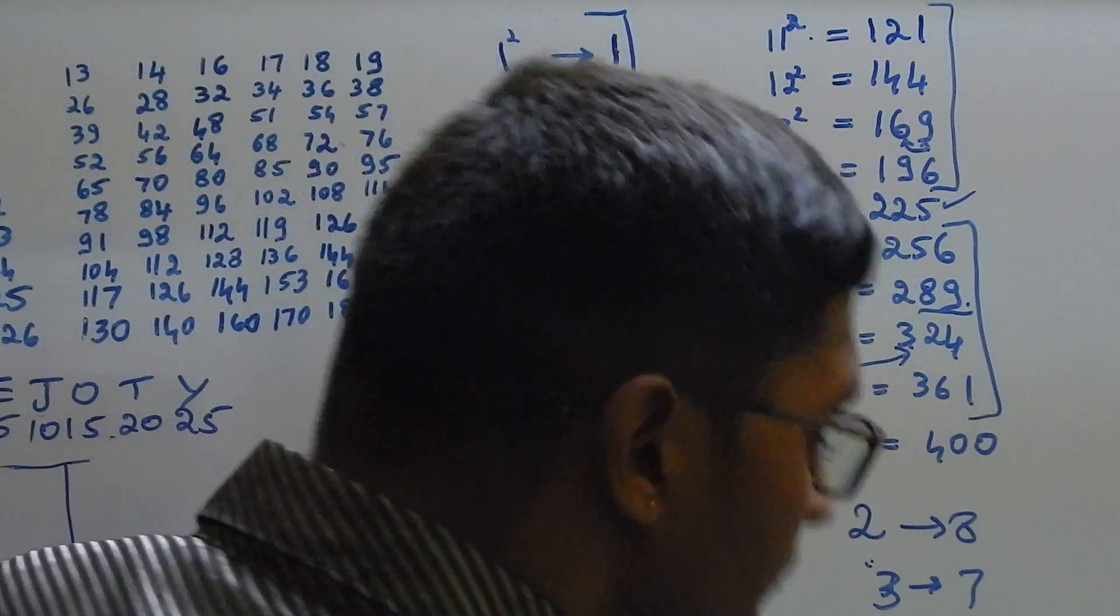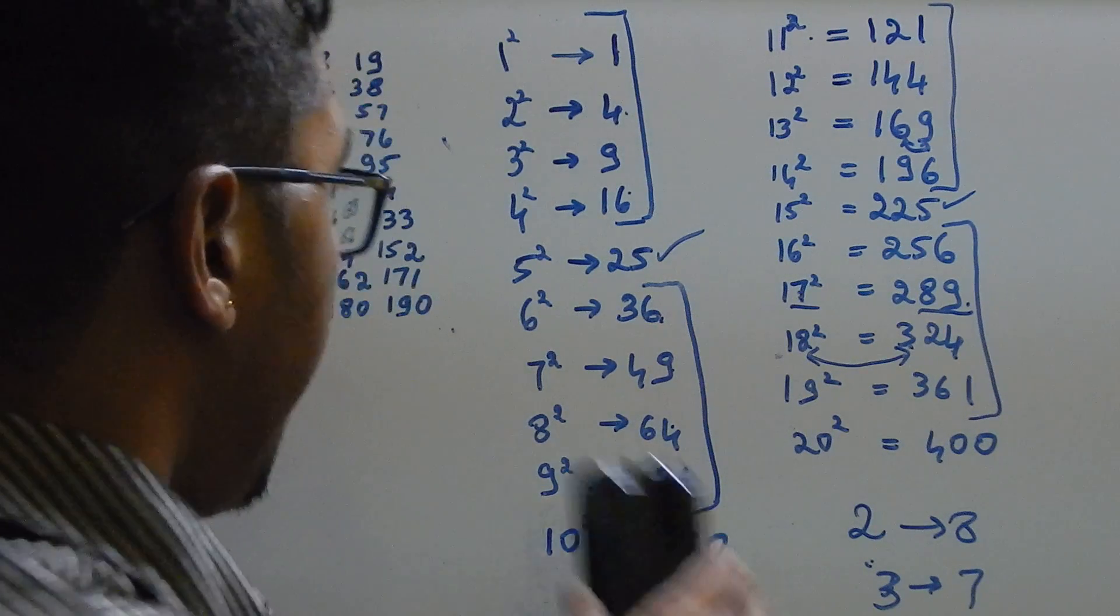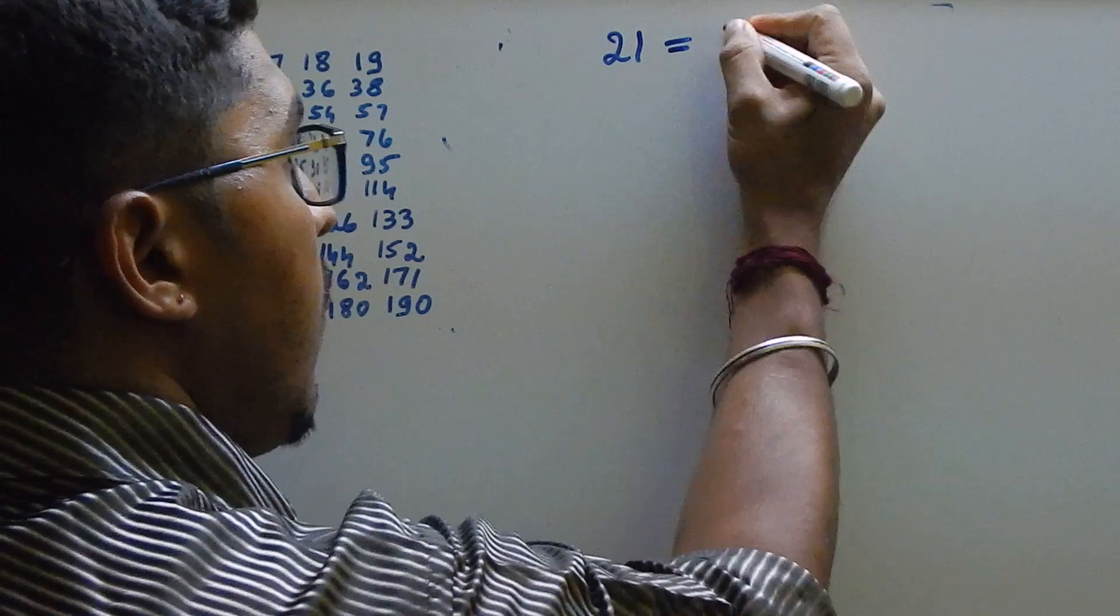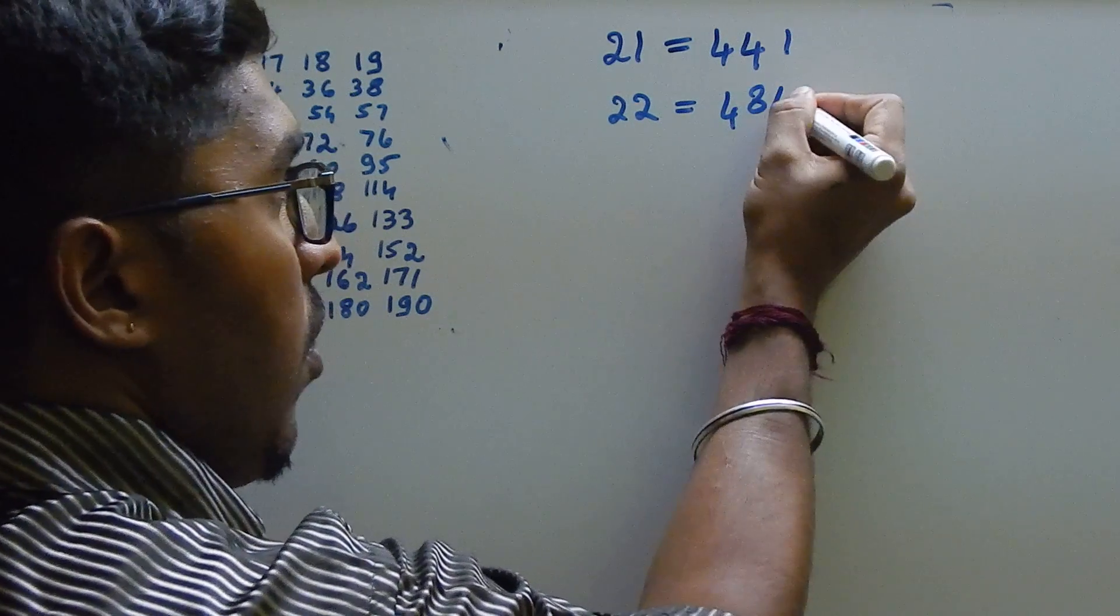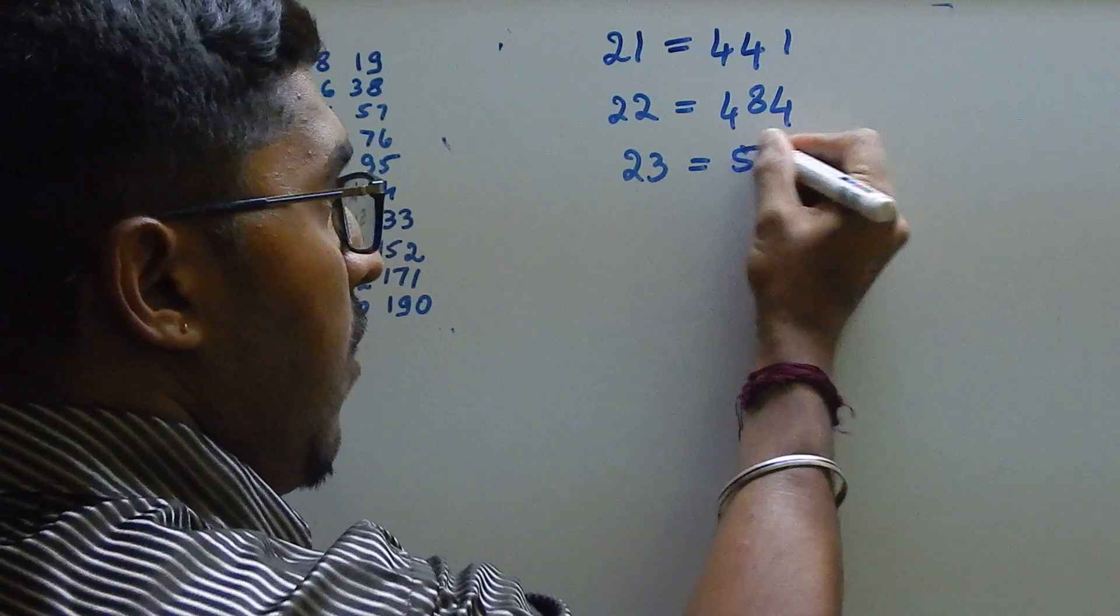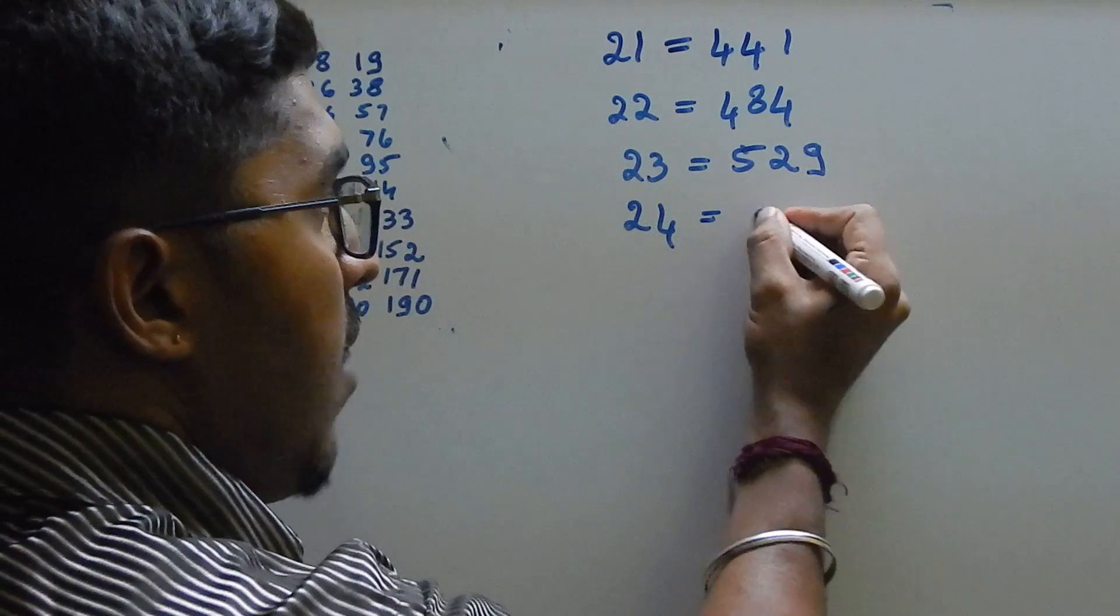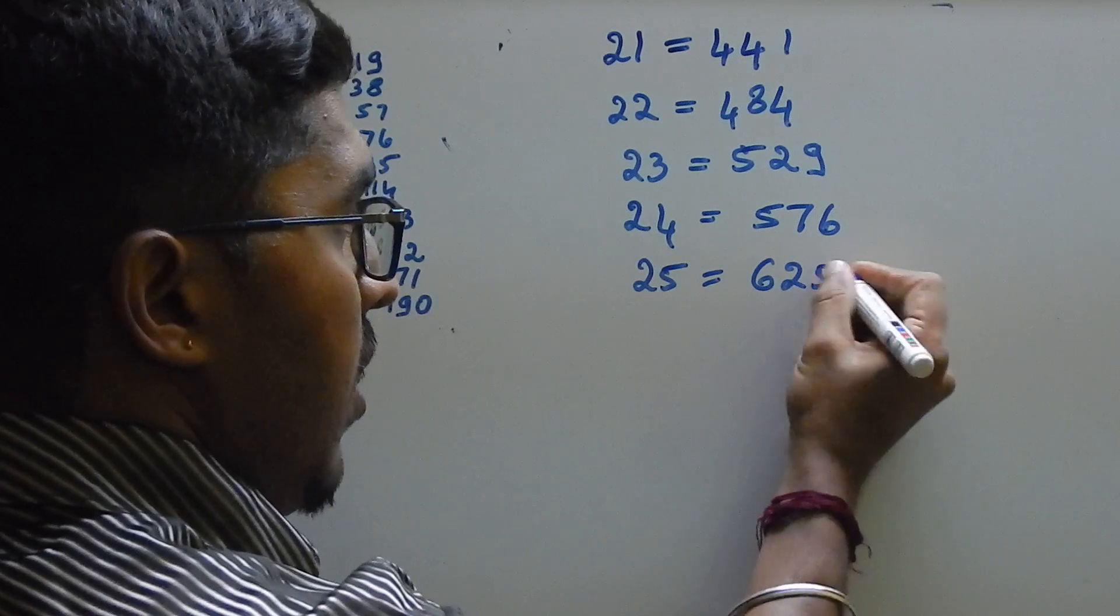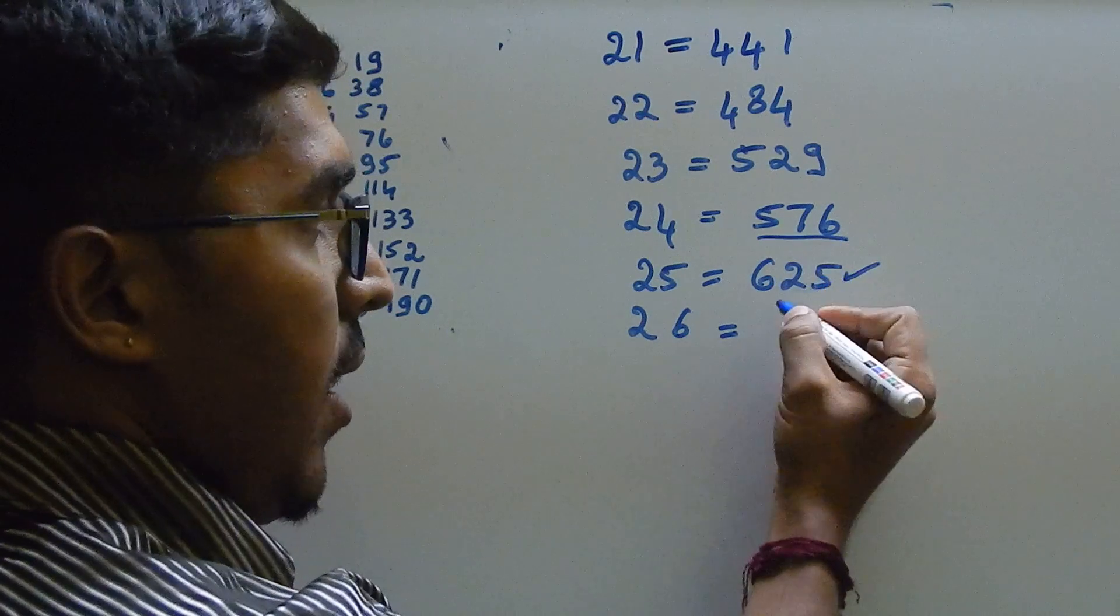So let's see the squares from 21 square to 30 square, that is a bit difficult to remember for few of the students. So what is 21 square? 21 square 441, 22 square 484, 23 square - this most of the times we come across this number 529, it's a famous number. 24 square 576, this you should remember. 25 square 625, this is also a famous number, most of the time it appears. 26 square 576 add 100 to get 676.